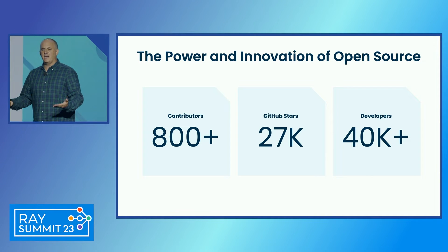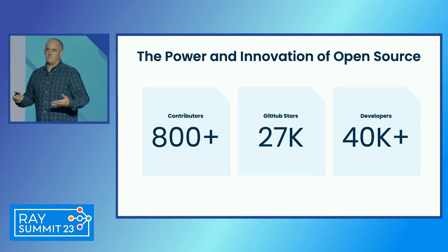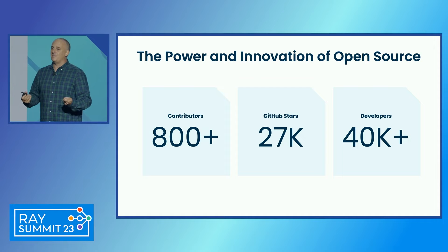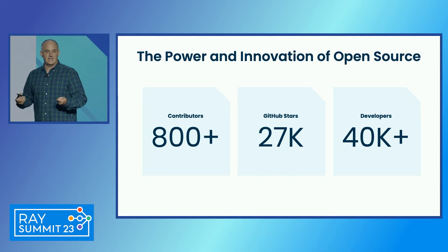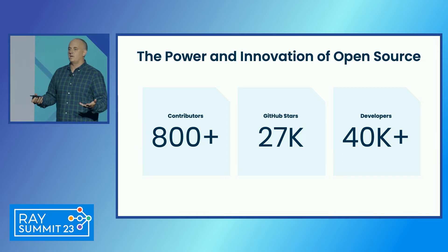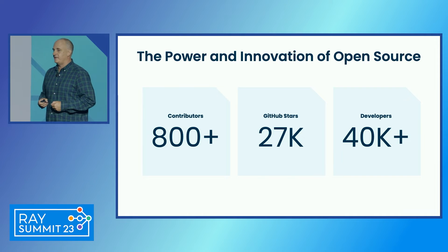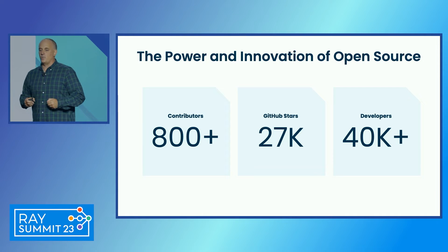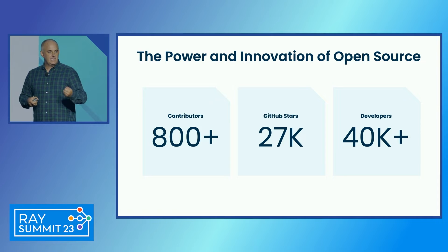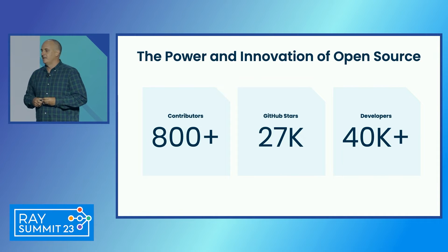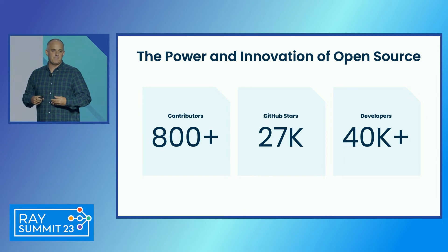About five years ago, we also realized that accelerated computing really needed to come to the world of data science. And so we built on top of Apache Arrow a project that we maintain called RAPIDS, and it brings accelerated computing into the world of scikit-learn and pandas. And again, it's an open project for the community.